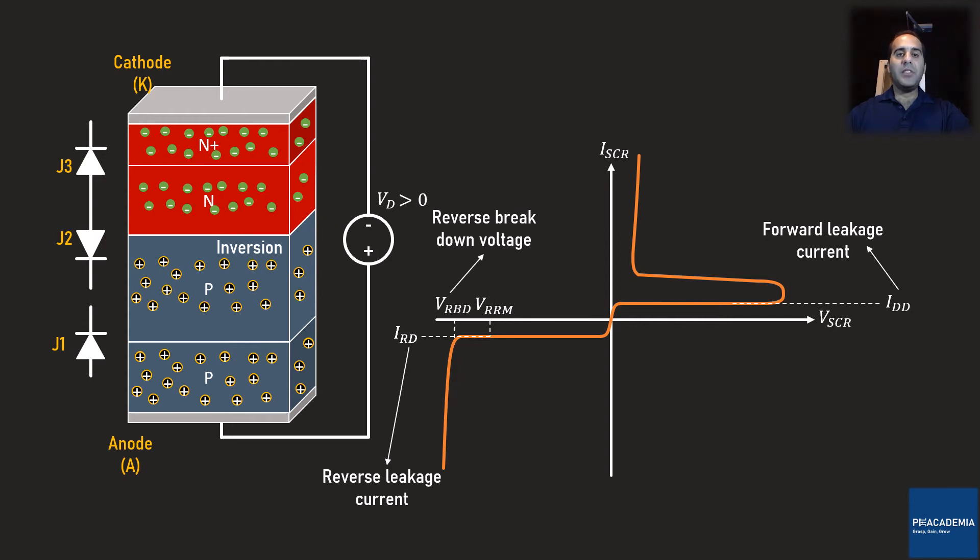Let's see how this behavior is translated in the IV diagram. In the forward blocking mode, by increasing Vd from zero, a small forward leakage current flows through the device, similar to the reverse blocking mode. In the forward blocking mode, a maximum voltage called VDRM is defined based on the maximum power the device can tolerate. Again, imagine that the maximum power the device can tolerate is 100 watts and the forward leakage current is 50 milliampere. Therefore, VDRM is 2 kilovolts.